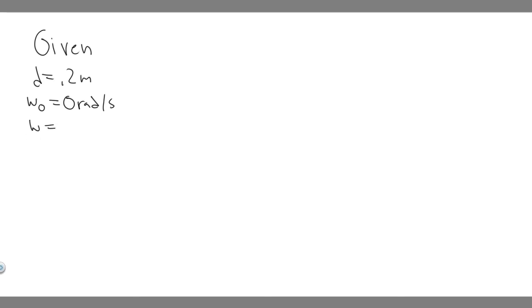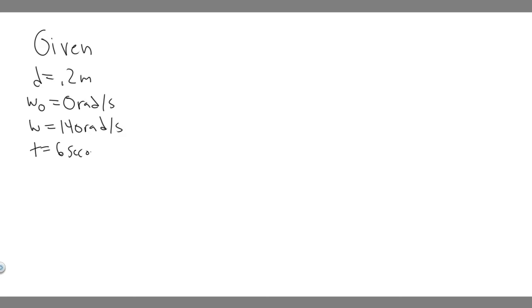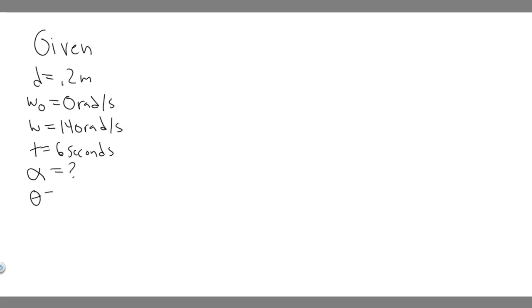The final angular velocity, or we can just call this omega, is going to be equal to 140 radians per second. It goes from 0 to 140 in this interval, which is t equals 6 seconds. There are two things we're trying to find: the angular acceleration alpha, and the angle through which it turns, theta.